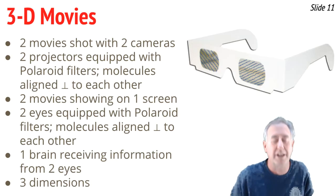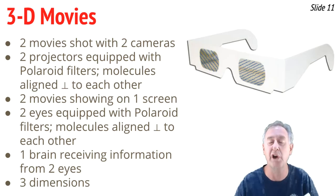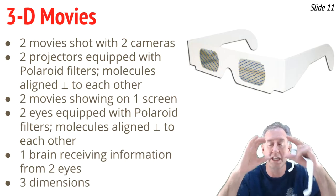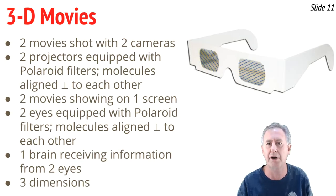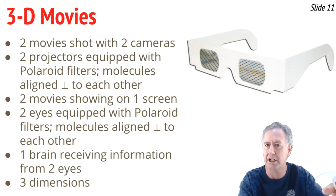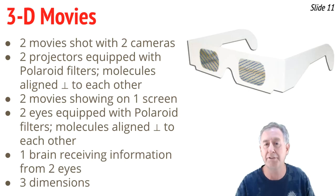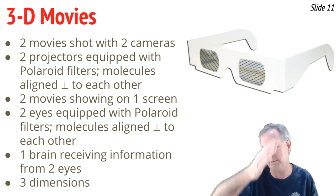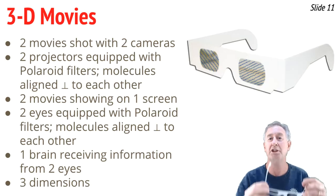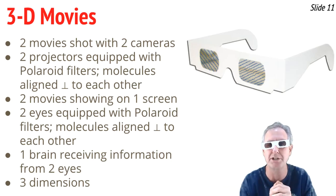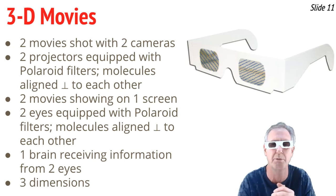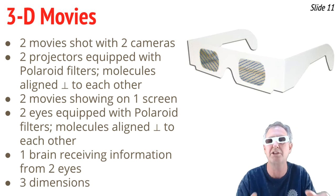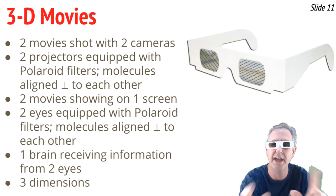These are 3D movie glasses — one of several varieties used when watching a 3D movie. How does it work? It begins when the movie is shot, using two cameras positioned about an eye's width apart. Those two movies are then brought to the theater and projected on the screen, but before they land on the screen, they pass through polaroid filters that polarize each movie. One movie is made by light vibrating vertically and the other horizontally — or diagonally, but perpendicular to one another. You put on these glasses, which have eyepieces aligned with the molecules one way and the opposite way, such that one eye sees one of the movies and the other eye sees the other movie, thus creating the perception of three dimensions. That's physics for better living.